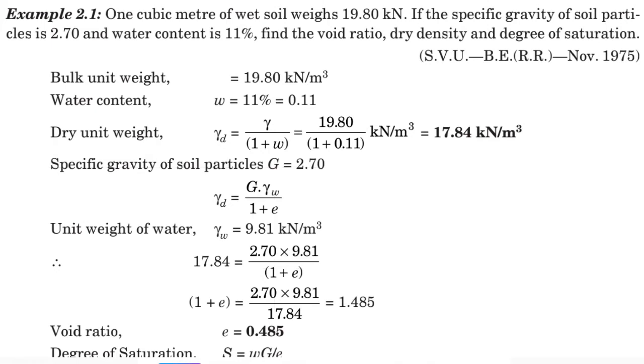The formula to find the dry density - first we have to find the dry density, after that we can find the void ratio. So dry density formula, gamma d equals gamma divided by 1 plus w. Now the gamma value 19.80 is given and w equals 11%, that is 0.11, is given.